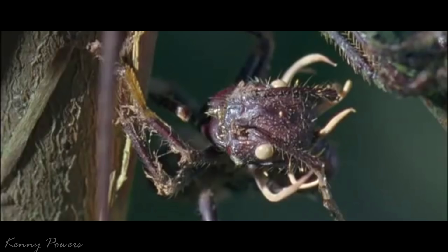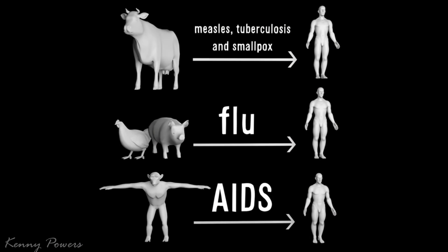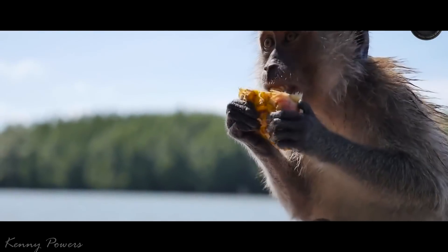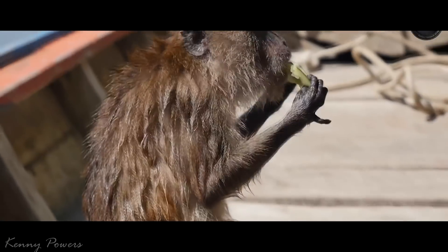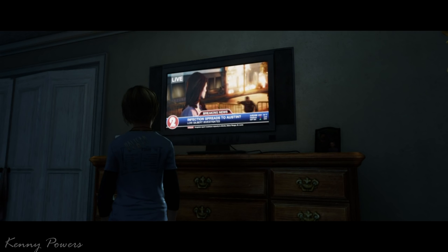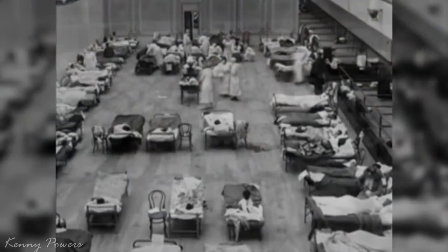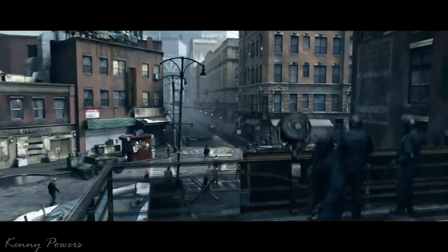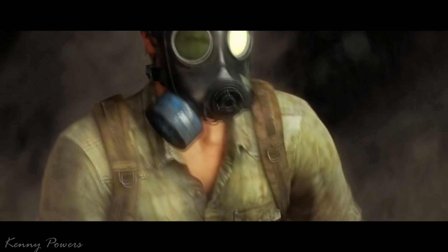On a darker, maybe more scary side, Cordyceps could be something much more if you use your imagination or really look into history. Imagine if Cordyceps could genetically mutate and affect humans. You could look in the past and see how something like this has already happened — AIDS, as the classic example, jumped from an animal to a human. Imagine if Cordyceps could jump from an animal to a human — the results would be catastrophic. Movies and media have already portrayed this, and you probably already know what it would look like. But that's just a theory, so maybe watch out anyway.